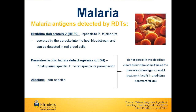The most common antigens that RDTs detect are histidine-rich protein 2, or HRP2, which is specific to Plasmodium falciparum. The next is parasite-specific lactate dehydrogenase, or PLDH, which can be specific to the four species of malaria or can be panspecific, meaning it can detect any species of malaria. Lastly, aldolase, which is also panspecific and will detect any species of malaria. PLDH and aldolase are unique in the fact that they do not stay in the blood for long, but clear around the same time as the parasites following successful treatment, and can therefore be useful in predicting treatment failure.